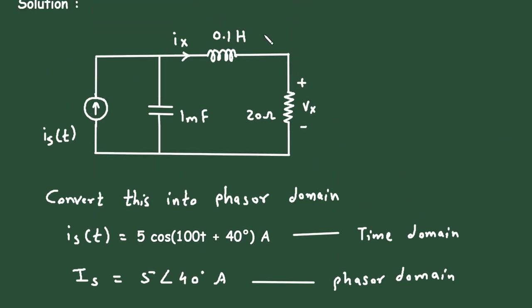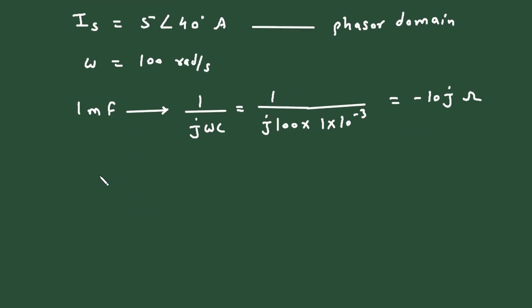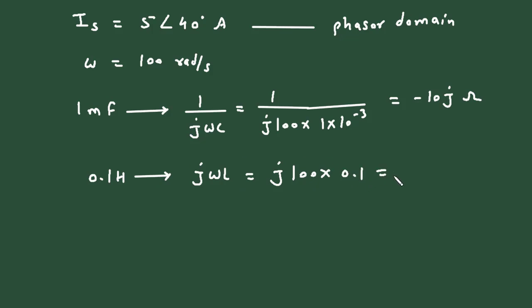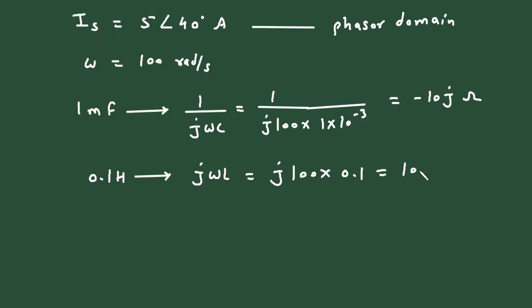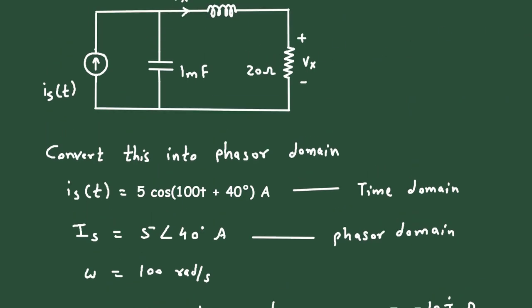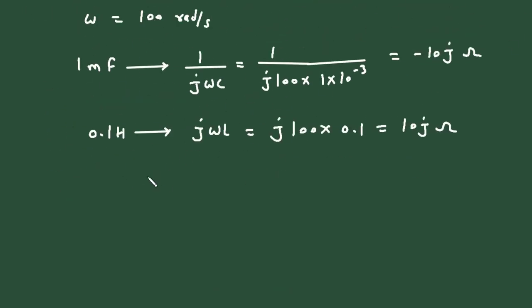Next, the 0.1 henry inductor converts to jωL = j × 100 × 0.1 = 10j ohm. The 20 ohm resistor will remain the same.